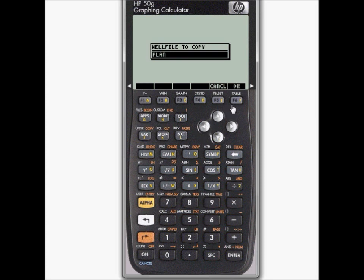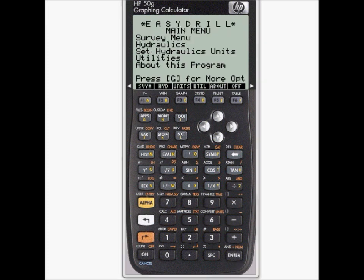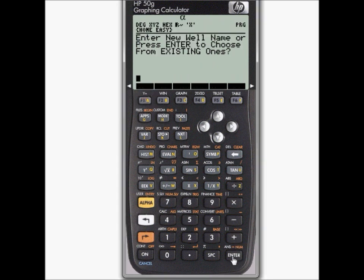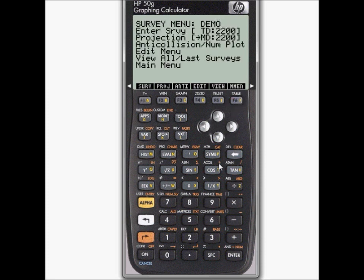We make a copy of plan, and we are going to call it demo. Returning to the survey menu from the main menu, we are asked to choose the well, but this time we choose demo. So now demo is the current well.